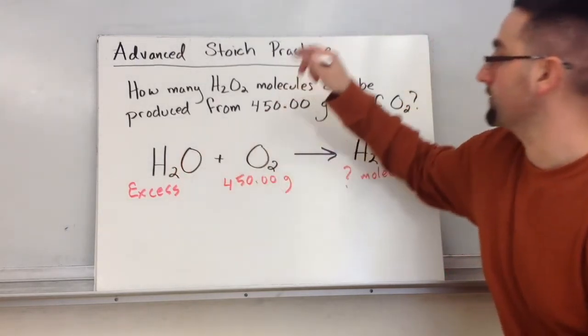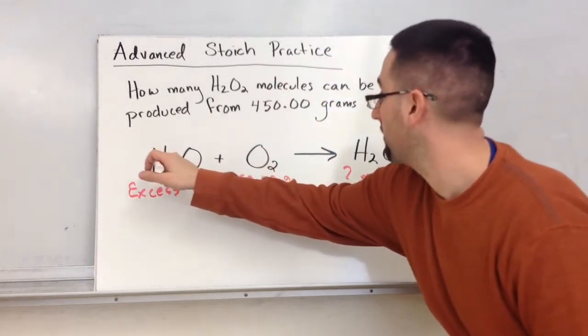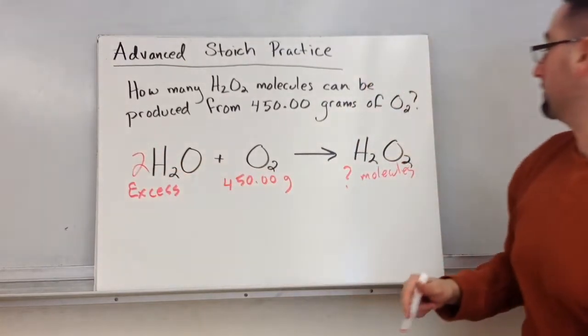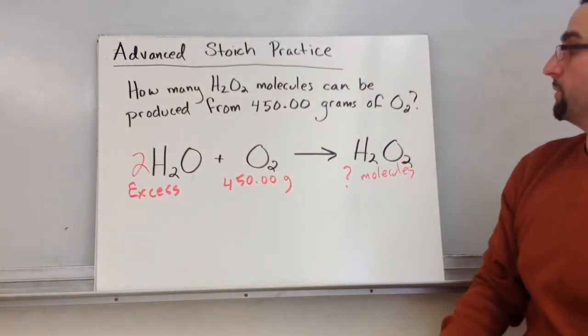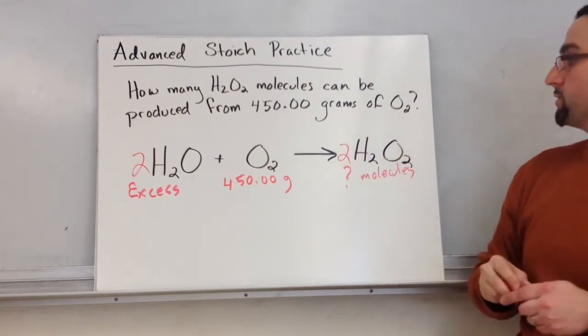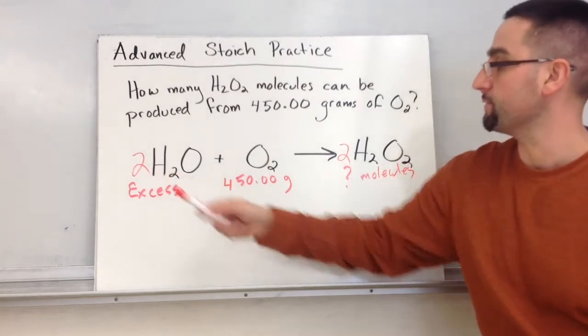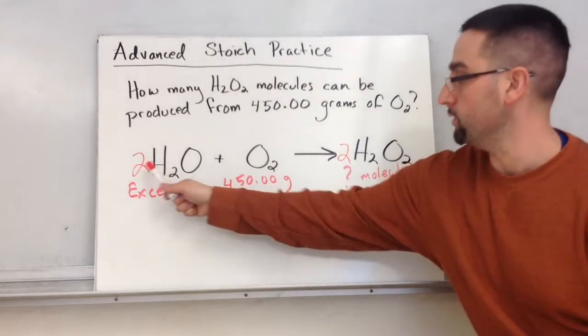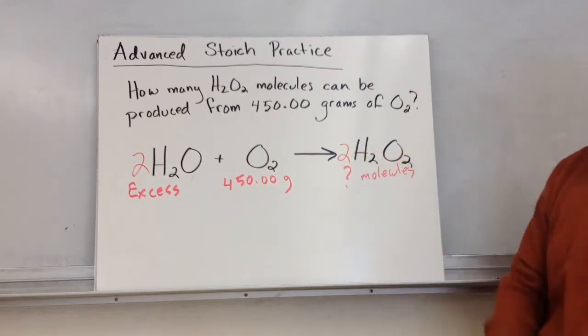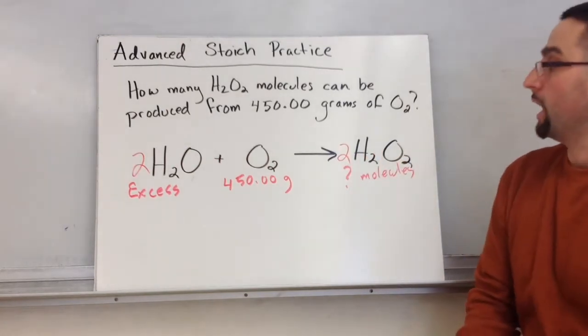So if we look at this, we're going to put a two. Let's see, if I put a two here, it's going to get me two times two is four hydrogens, two times one is two plus two is four oxygens, and we get two times two is four. All right, so we're balanced.